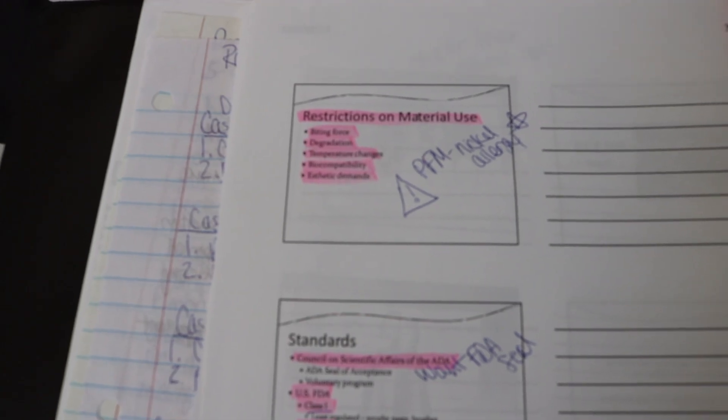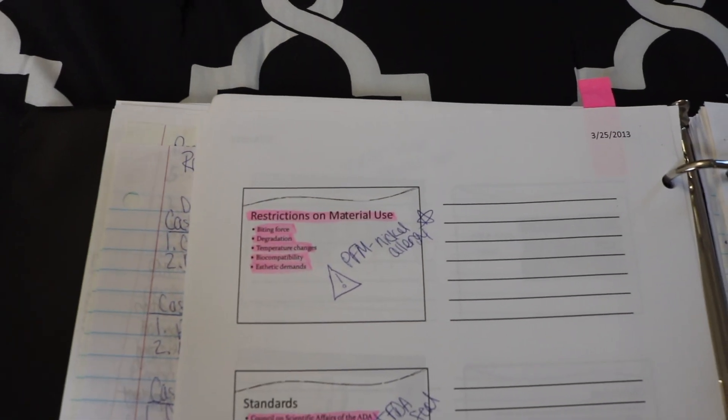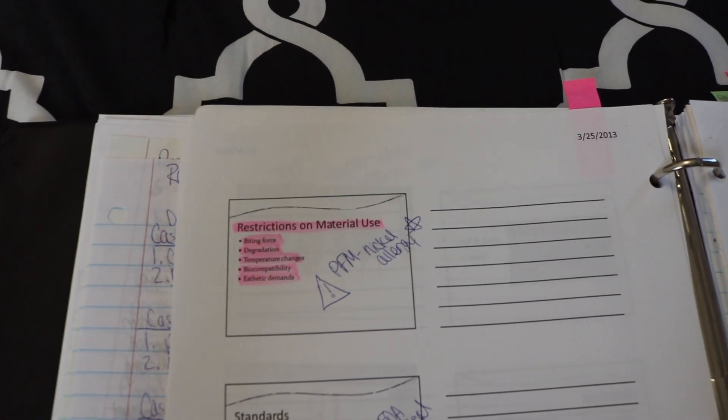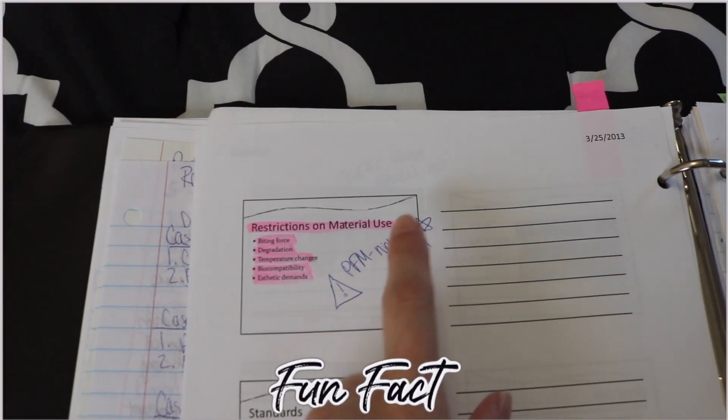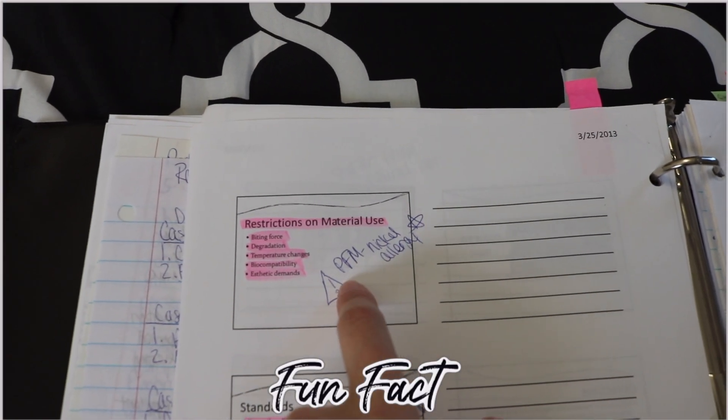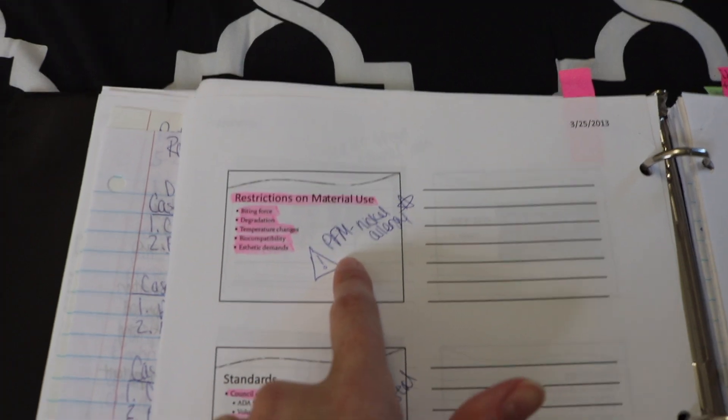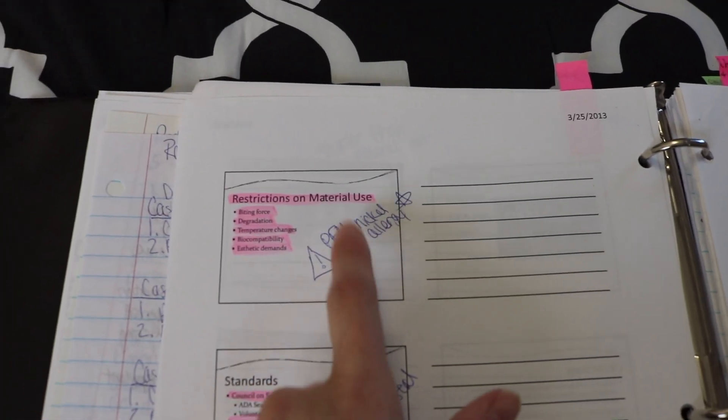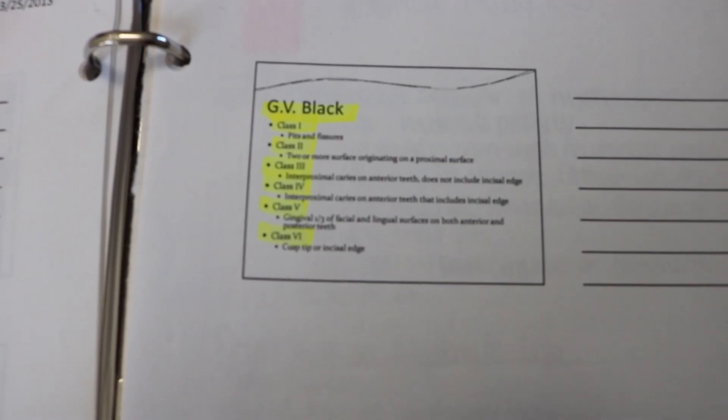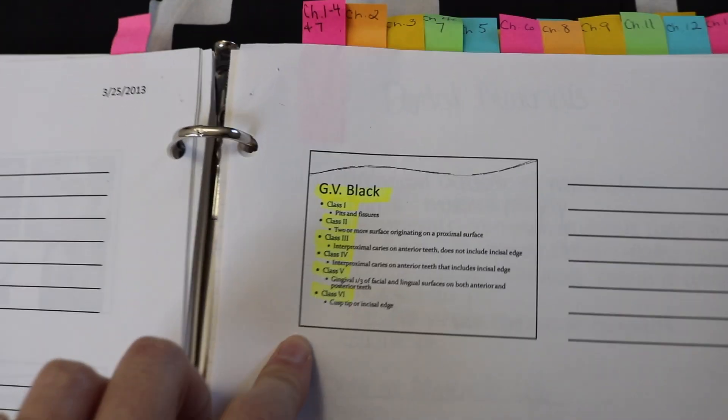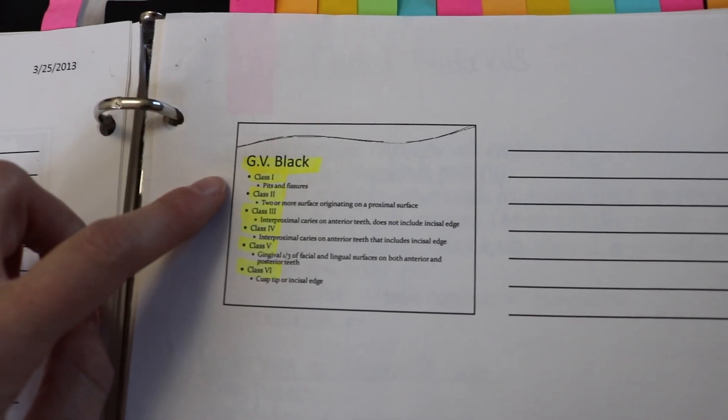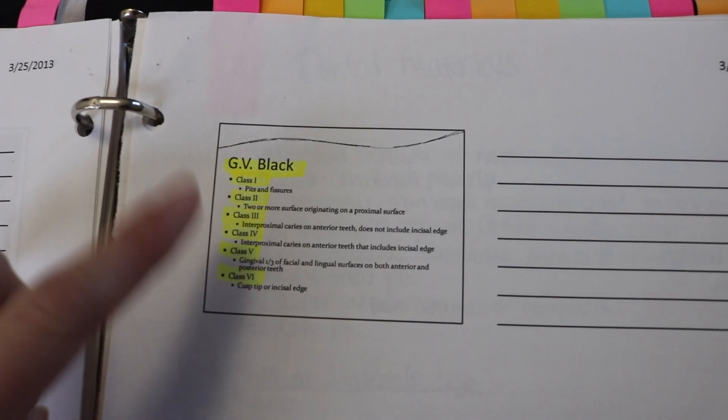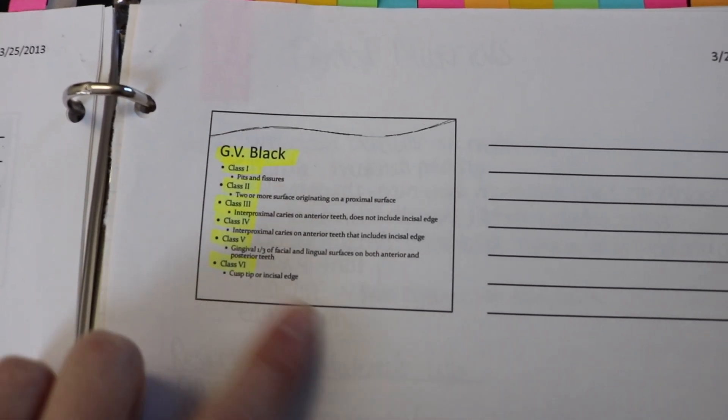So there are some restrictions to what materials we can use depending on your biting forces, what aesthetic demands do you have, if you have any allergies. FYI if you have a nickel allergy you cannot have a porcelain fused to metal crown. So make sure if you have a nickel allergy that we know about it. GV Black is what we used to classify the different types of fillings that you get done. If it's a class 1 filling all the way to a class 6. Class 6 are very uncommon.